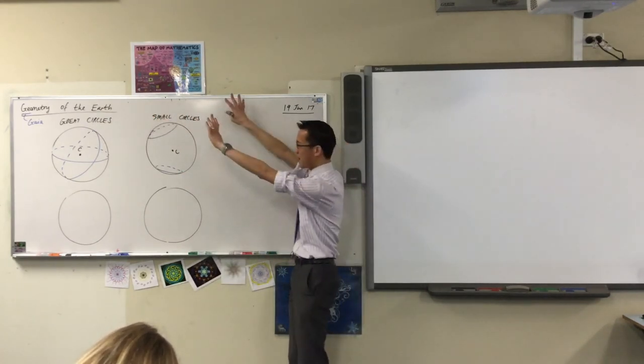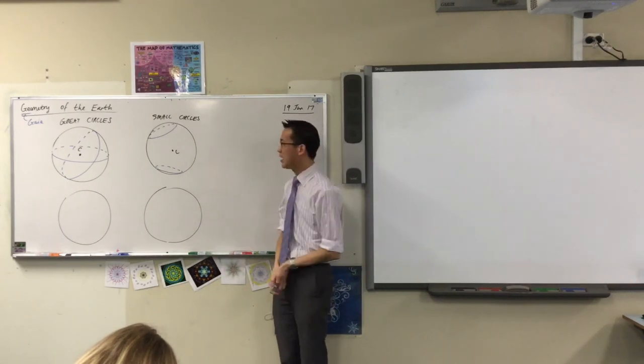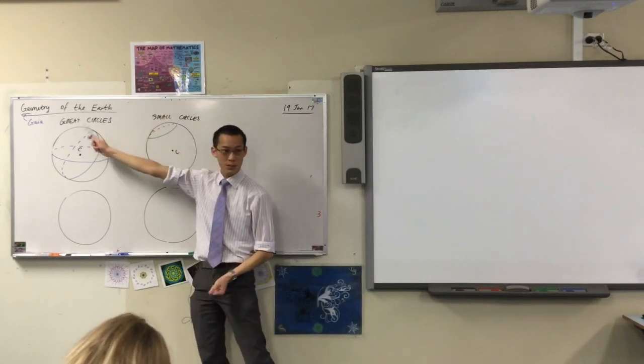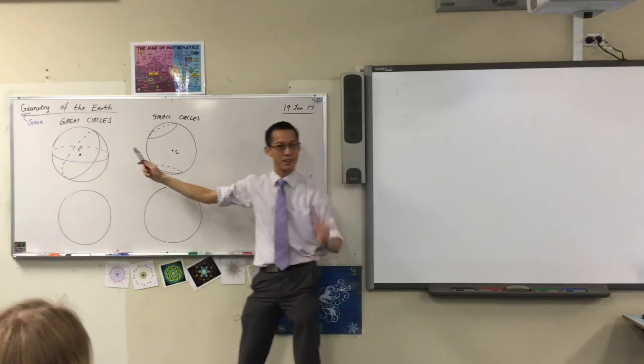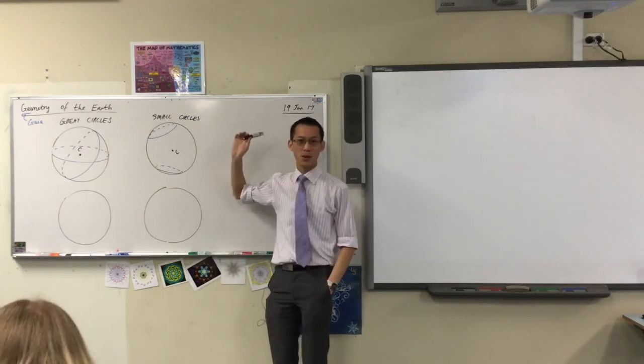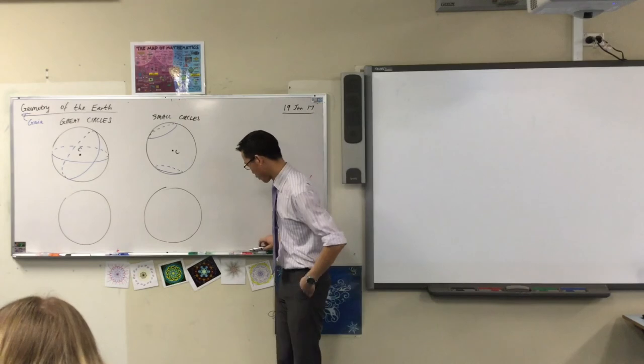So, I've got our spheres arranged in this way, because there are very important great circles that we're interested in, that are valuable for geography. And also very important, small circles. So we're actually going to start with the small circles.